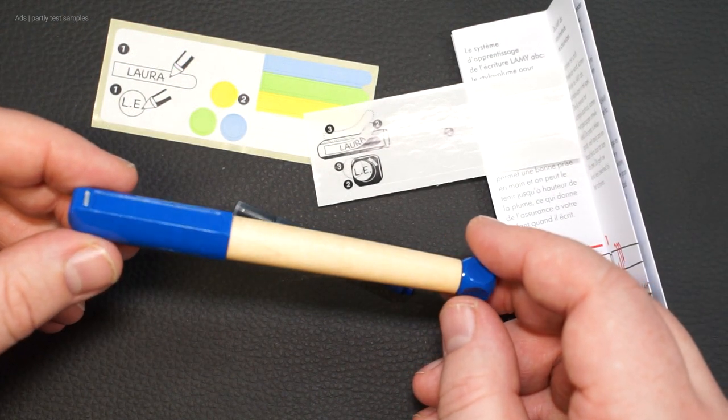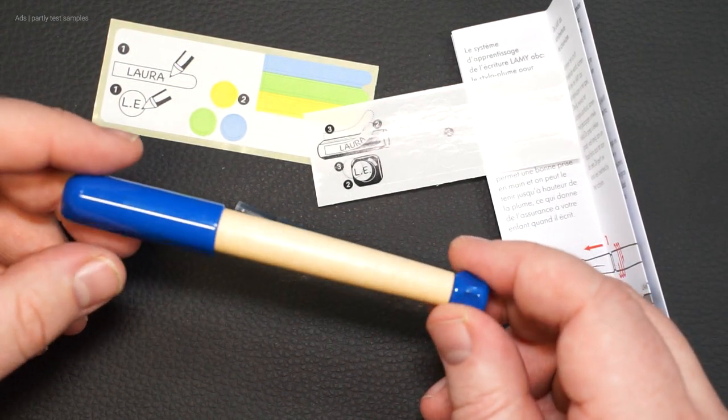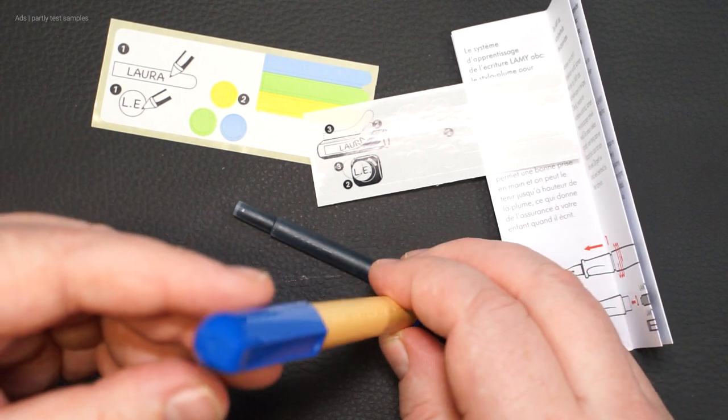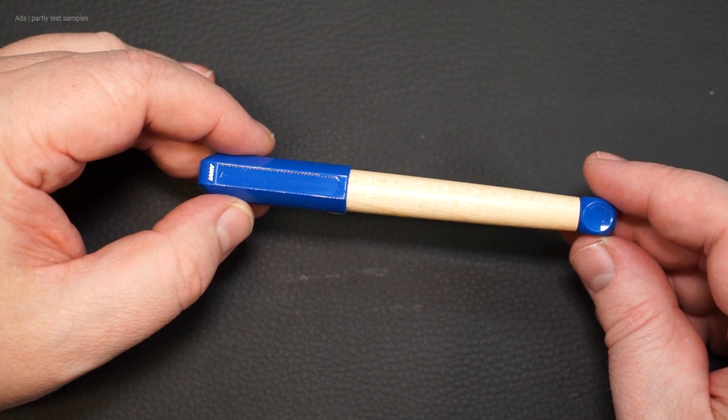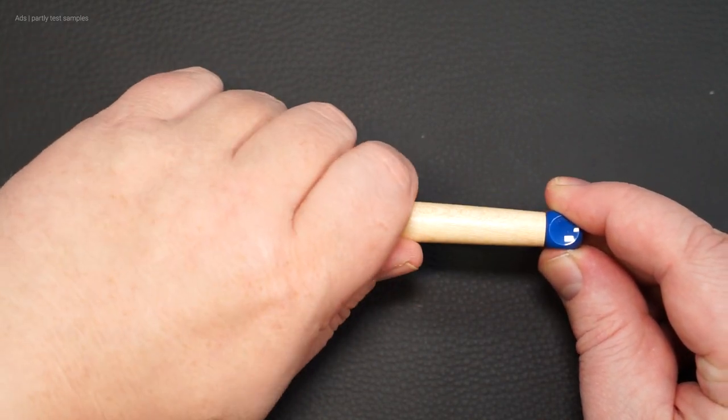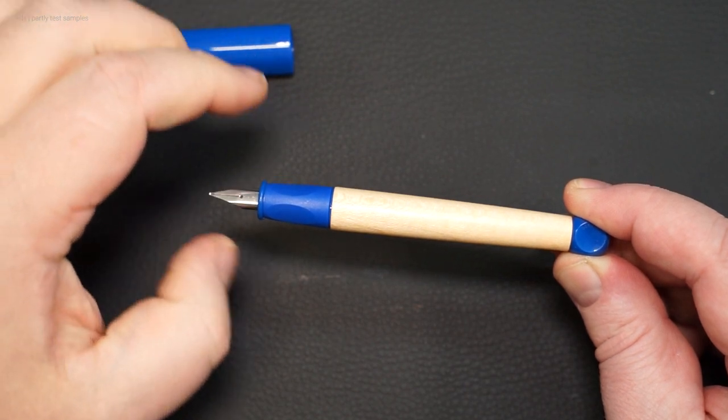The Lamy ABC. The Lamy ABC has been manufactured in exactly the same design and materials for many years. We have a wooden body with the plastic elements. It's the only one in the selection that requires its own cartridge type.